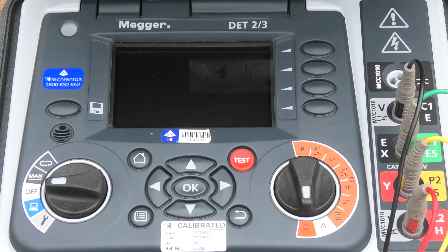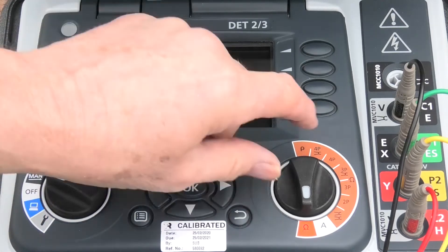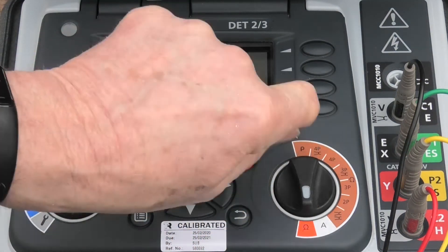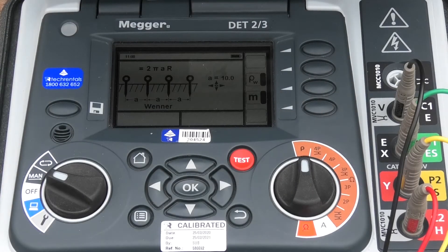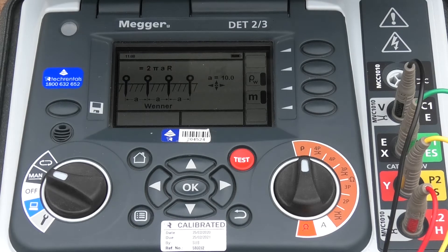I'm going to power the instrument up. I'm going to switch this to manual, and I'll switch this to the row symbol up here. Now the instrument powers up.